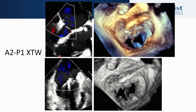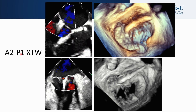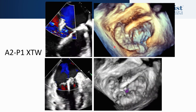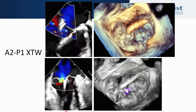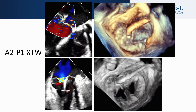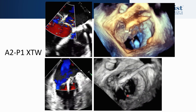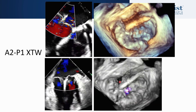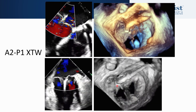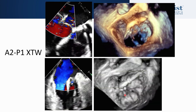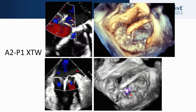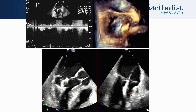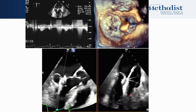Here is the result after the first clip. We placed the clip as planned from the A2 to the P1 scallop region. There is some residual regurgitation medial to the clip, as expected. The corresponding 3D color image shows the clip nicely affixed to the A2 and P1 scallop with a nice tissue bridge and a small jet of mitral regurgitation medial to the clip as anticipated. The gradient across the mitral valve was only 1 mmHg.